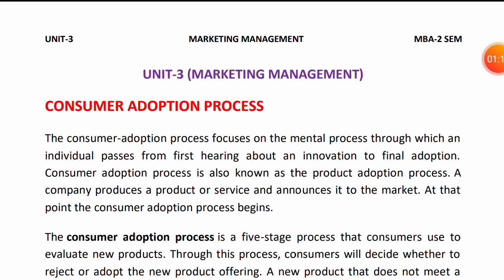Consumer Adoption Process का मतलब है: वो stages जिनके through कोई भी individual या consumer, first time किसी भी innovative product के बारे में सुनता है और उसे finally adopt यानि purchase कर लेता है। वो जो mental process होता है, वो sequence होता है — उन्हीं stages को हम Consumer Adoption Process बोलते हैं। Consumer Adoption Process और Consumer Decision Making Process में difference है: Consumer Adoption Process basically innovative या new product के लिए होता है, जबकि Consumer Decision Making Process में पहले से market में alternatives available होते हैं।